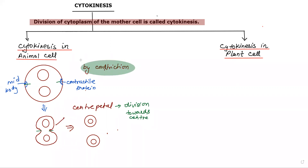This kind of division is called centripetal — centripetal meaning division towards the center. So the constriction happens and the cell divides. Cytoplasmic division takes place by constriction in animal cells. Now let's see cytokinesis in plant cells.